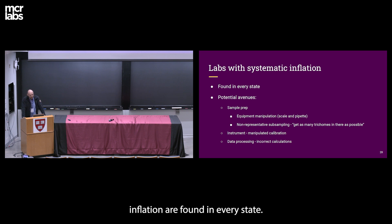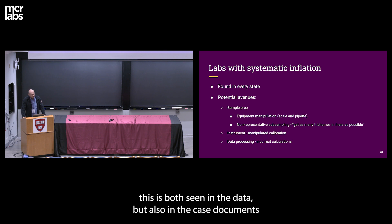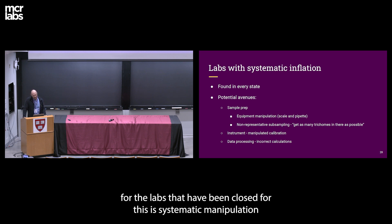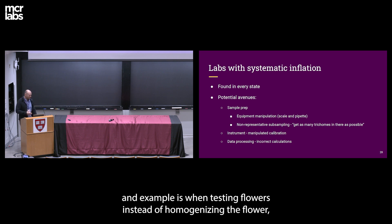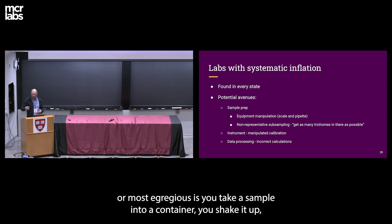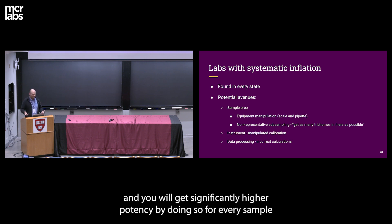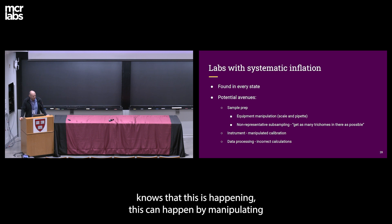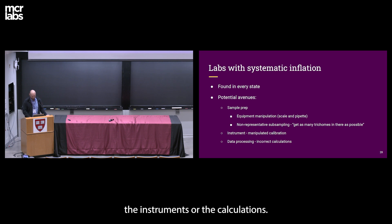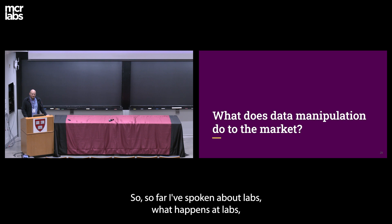Labs with systematic inflation are found in every state. The approach — seen in the data and in case documents for labs that have been closed — is systematic manipulation where they take the same approach for all samples. An example: instead of homogenizing the flower, you get as many trichomes as possible into the weigh boat, or you take a sample, shake it, and test whatever falls off — getting significantly higher potency for every sample. A lone-wolf approach can also occur where a single person in the lab manipulates instruments or calculations.